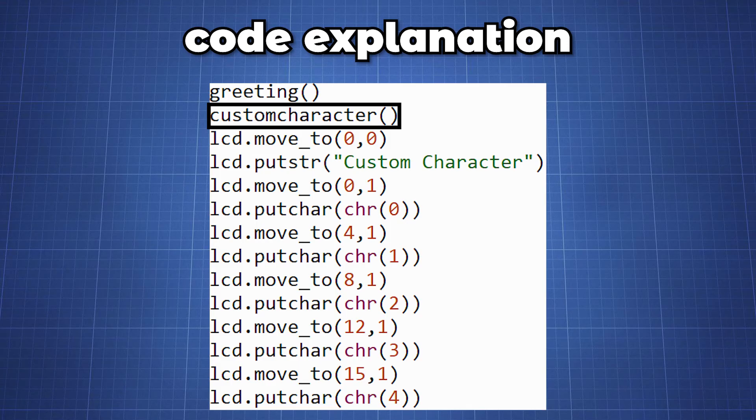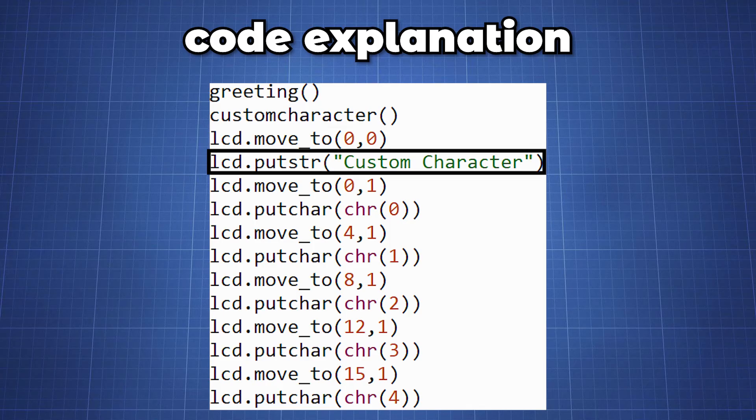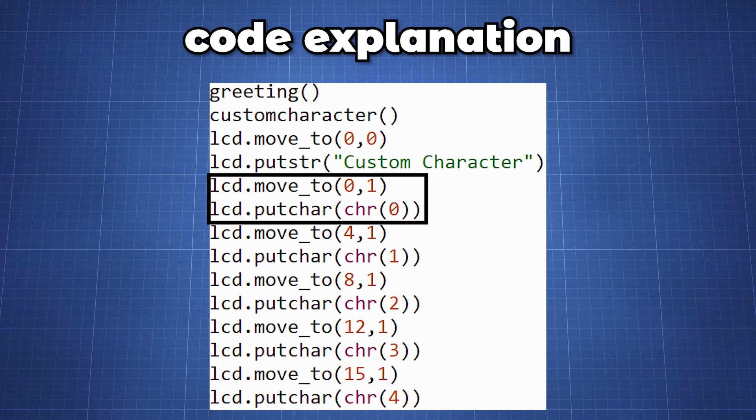In the last part we can call our function greeting to display our text and call the function custom_character to store our character. Now we move our cursor to the beginning 0,0 and we write a custom character as text on our first row. To put the character at different positions we can use the putchar function, giving the character a location from the custom characters we have created.